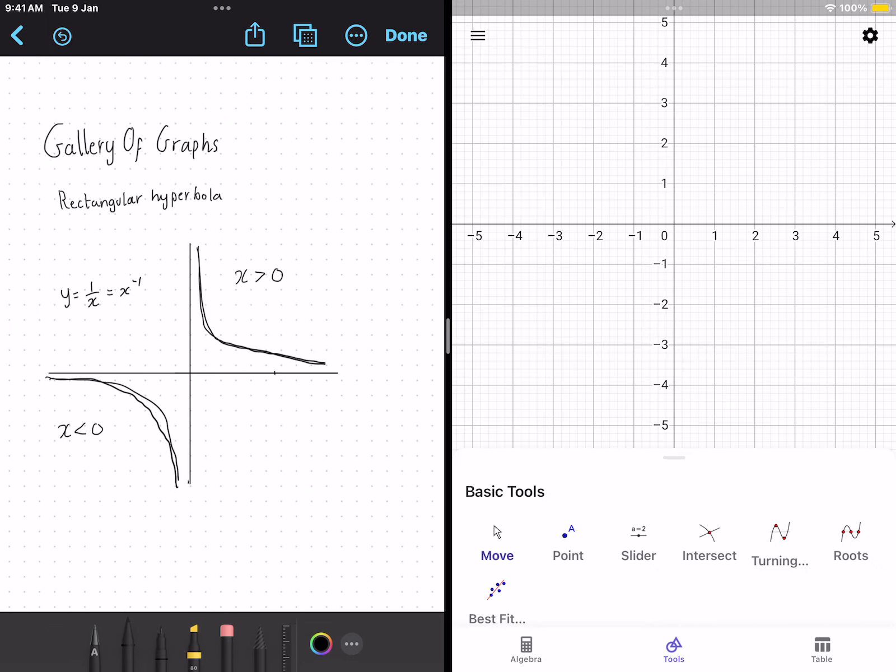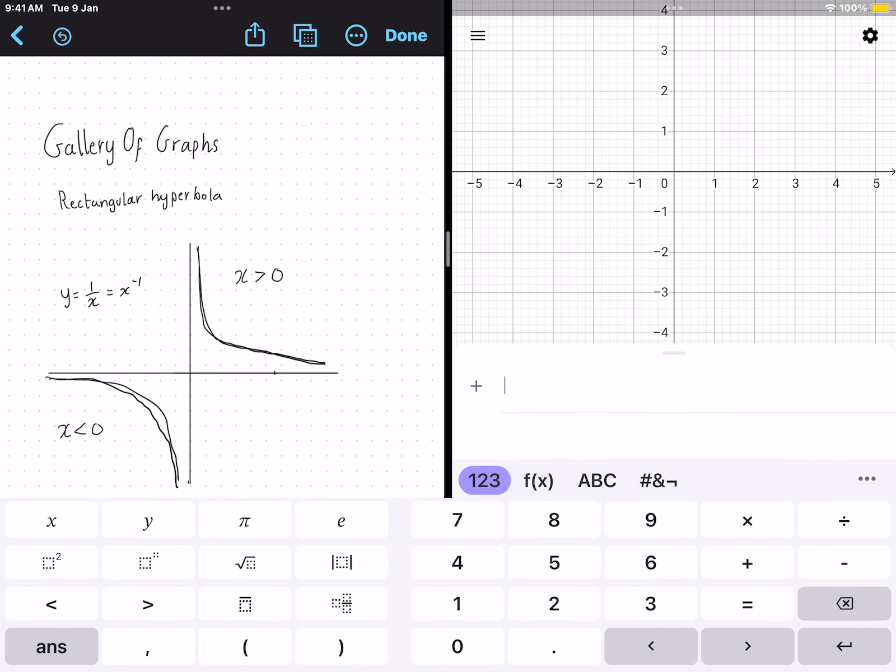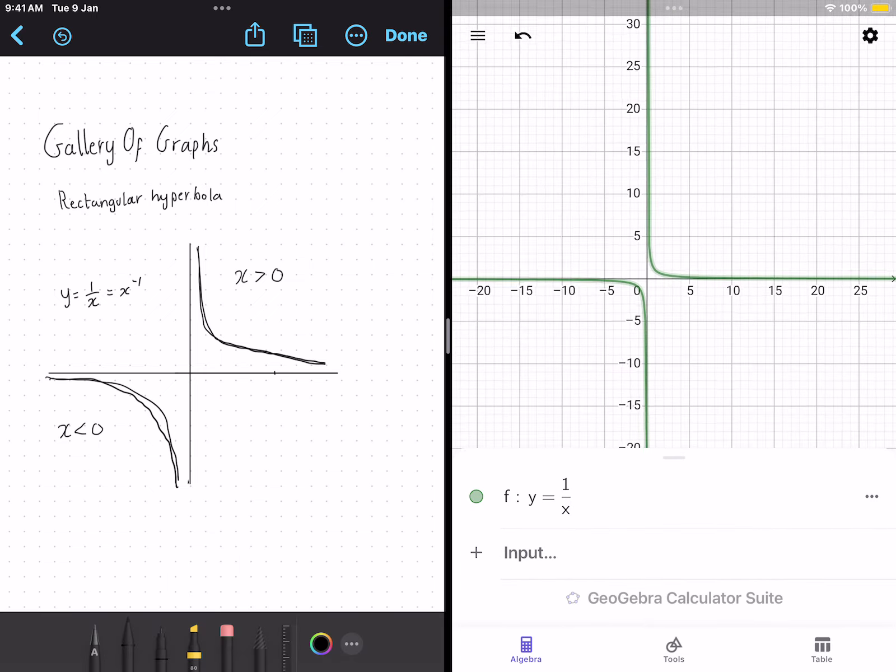So we can replicate this on a graph on the GeoGebra tool. We write the equation y equals 1 over x. We can see the hyperbola right here, what we just did.